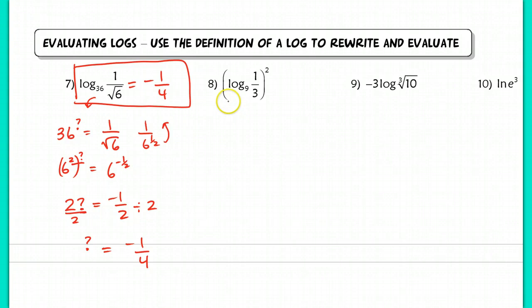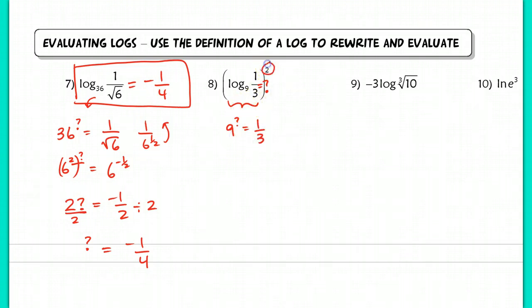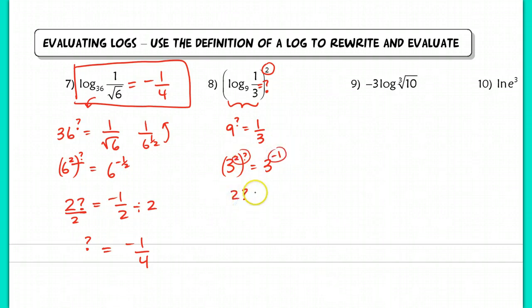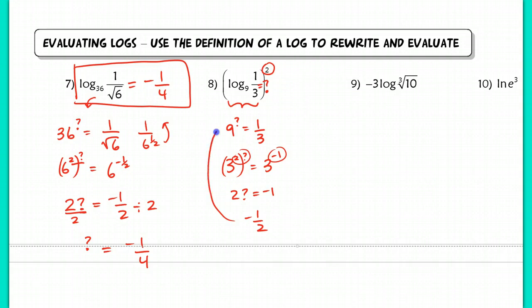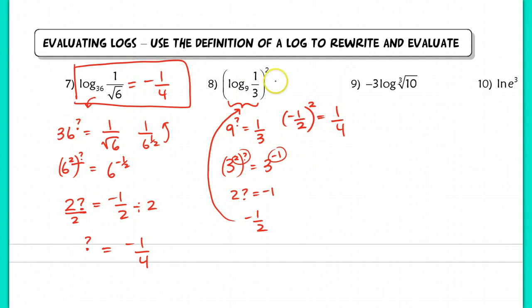In number 8, I evaluate the inside first. We have 9 to some power equals one-third. Rewriting with the same base: 3 squared to some power equals 3 to the negative 1st. So 2 times the power equals negative 1, divide by 2 to get negative one-half. The inside of this equals negative one-half. Then I apply the square to negative one-half to get positive one-fourth. So the answer to the original problem is one-fourth.